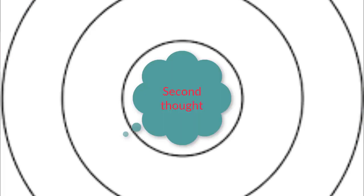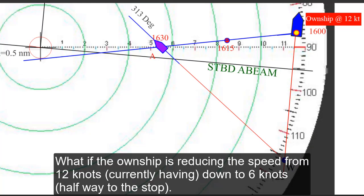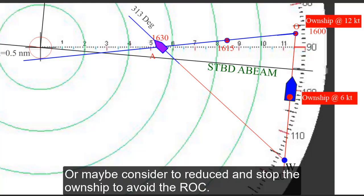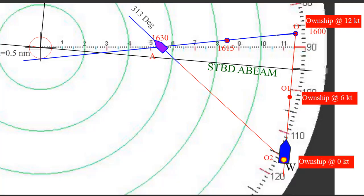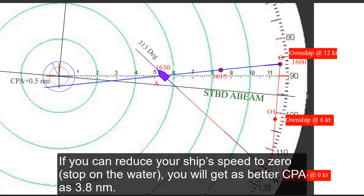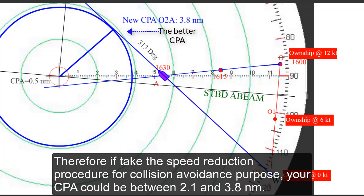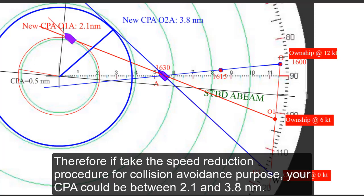Now it is for the second thought, what if the own ship is reducing the speed from 12 knots which is currently having down to the 6 knots which is halfway to the stop, or maybe you consider to reduce the speed and stop the own ship to avoid the risk of collision. Reducing speed to 6 knots will result in CPA of 2.1 nautical miles which will satisfy the master's order. If you can reduce your ship to zero which is stopped on the water then you will get a better CPA as 3.8 nautical miles.